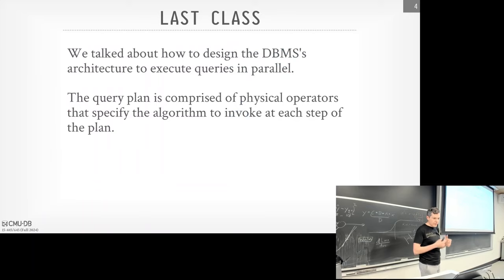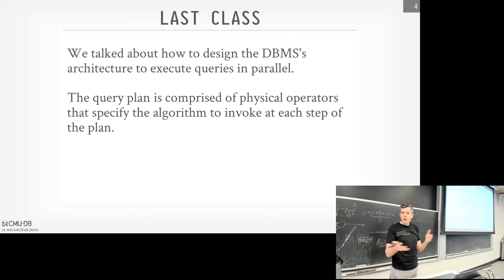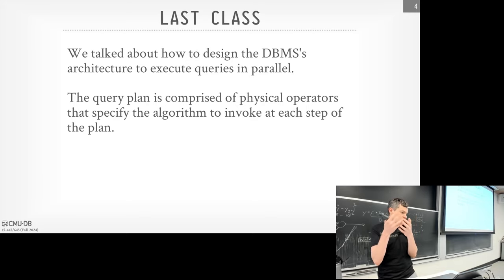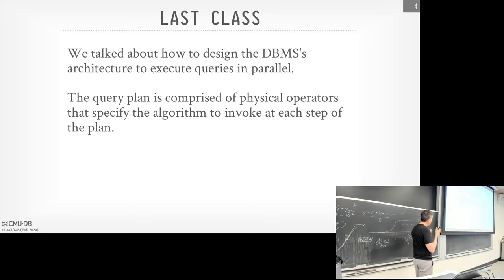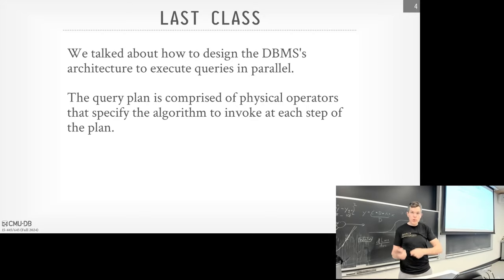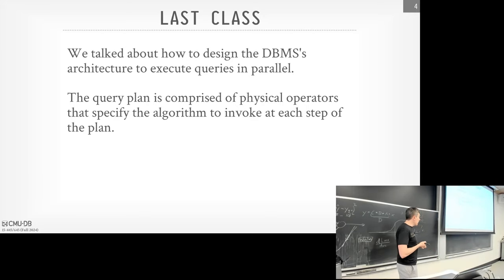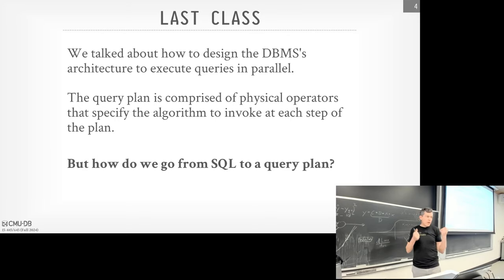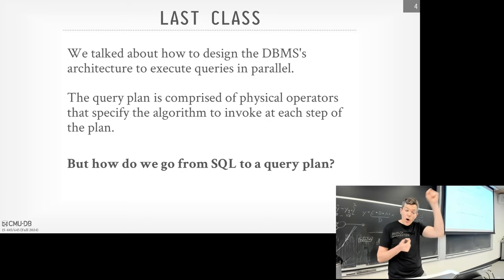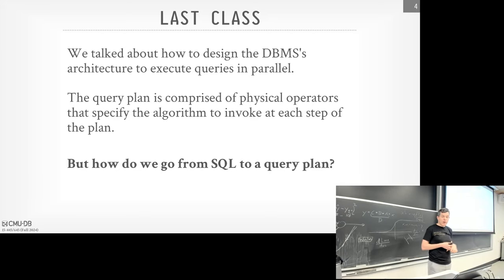Last class we talked about how to take a query plan and run it in parallel. Before that, we talked about query execution — how to architect the system to move data between operators using tuples, batches, and so forth. We talked about physical operators: hash join, nested loop join, sort-merge join, index lookups, sequential scans. Today's class is about how to get those query plans — how do we go from a SQL query and generate the physical plan we can execute, using the process model we discussed.